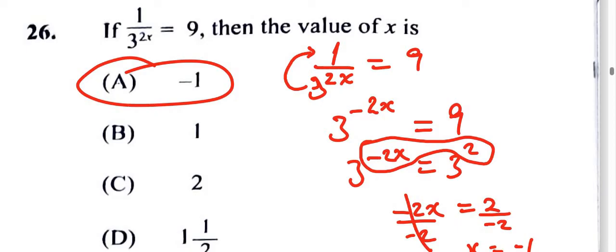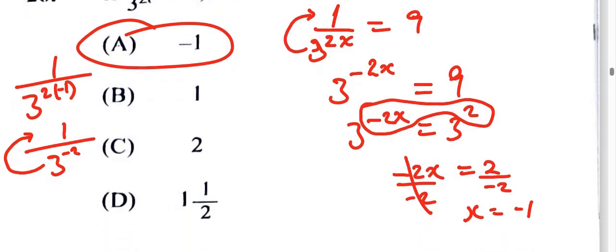This would be 1 over 3 to the power of 2 times negative 1. So it's going to be 1 over 3 to the power of negative 2. And again, once it's on top, it will become a positive power. So it becomes 3 to the second power.